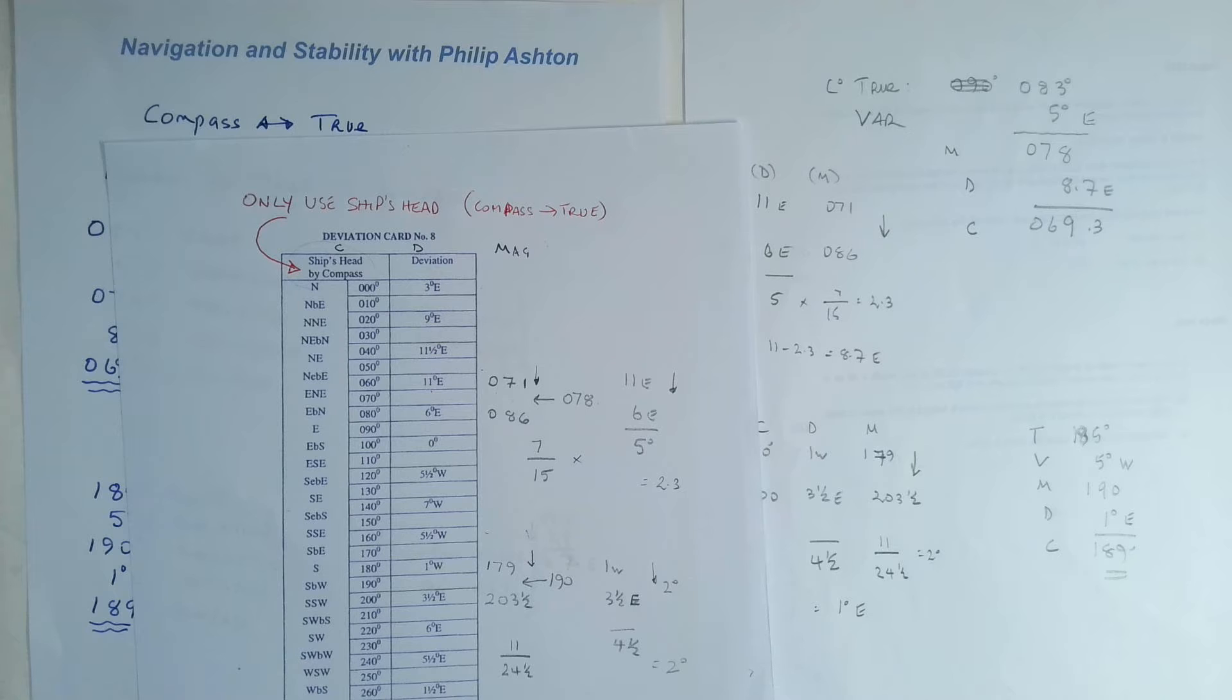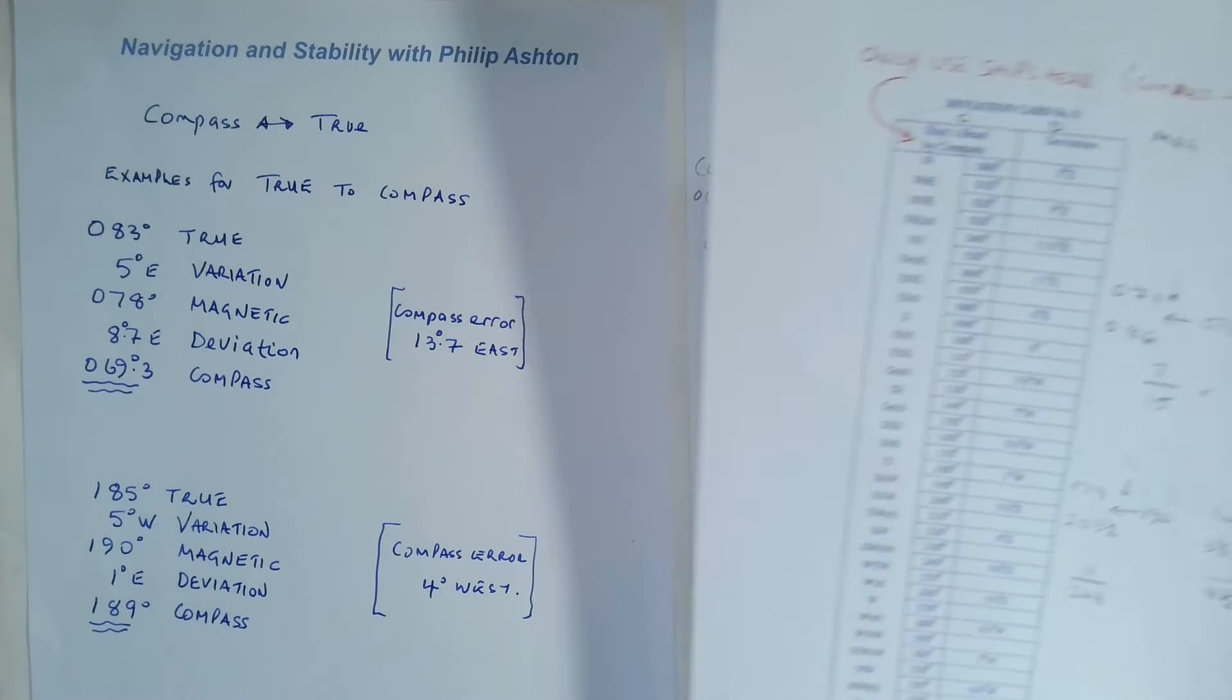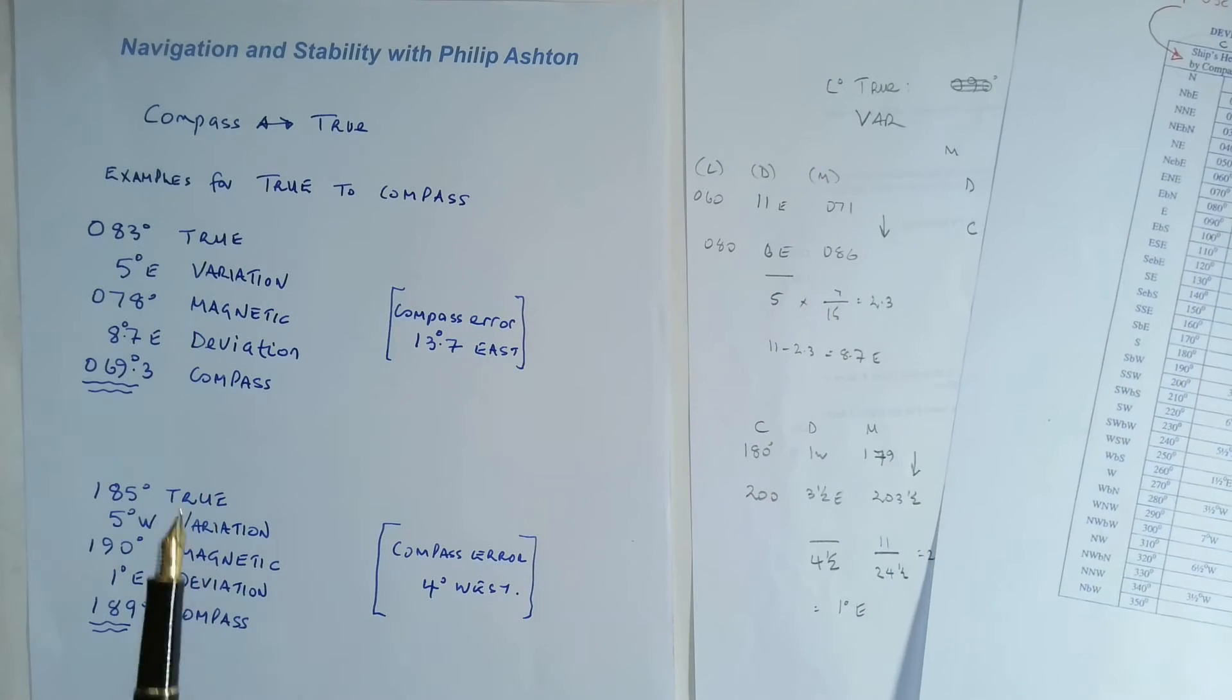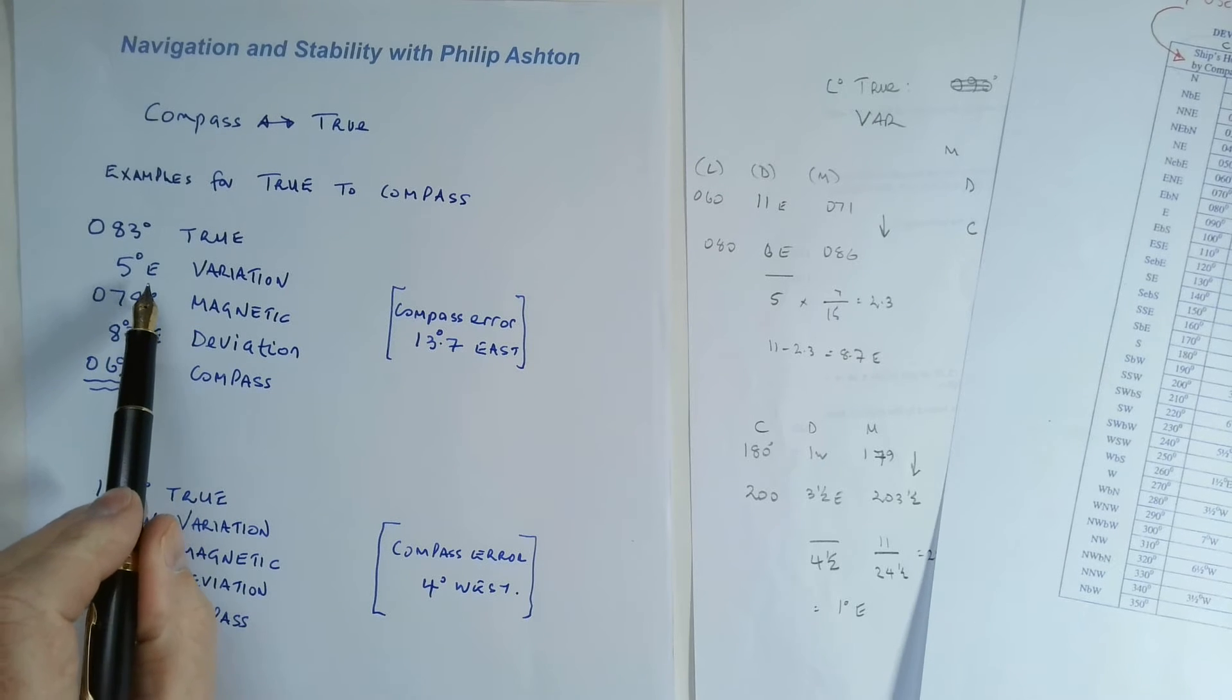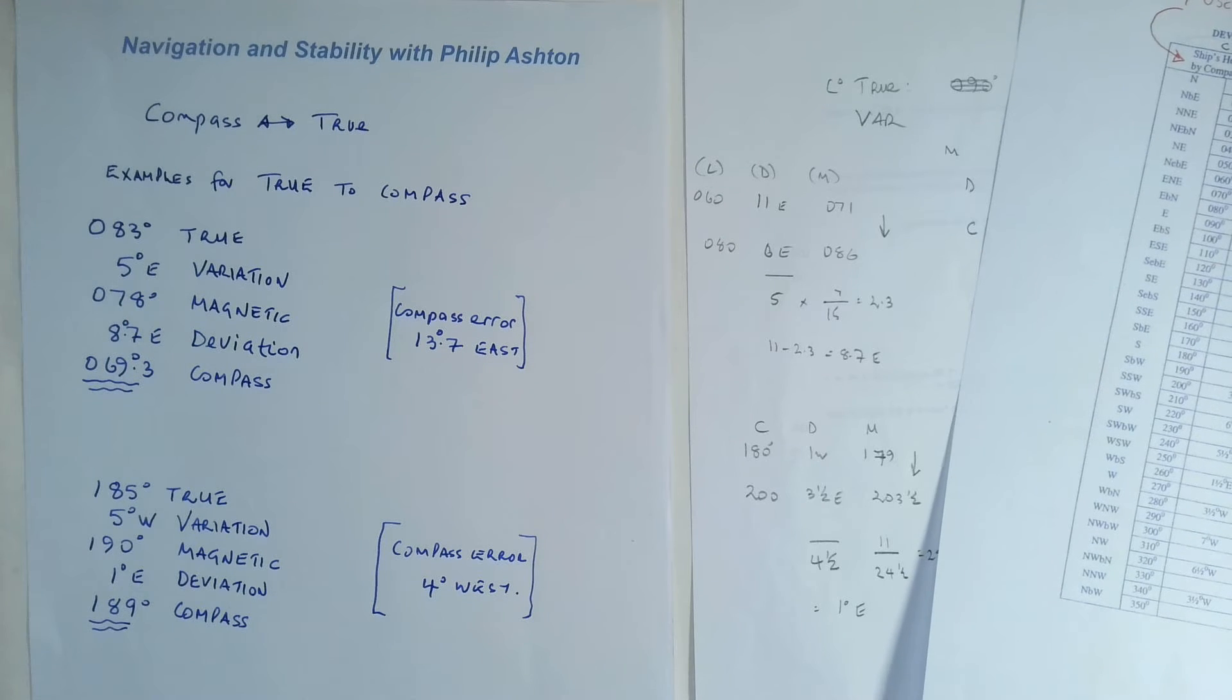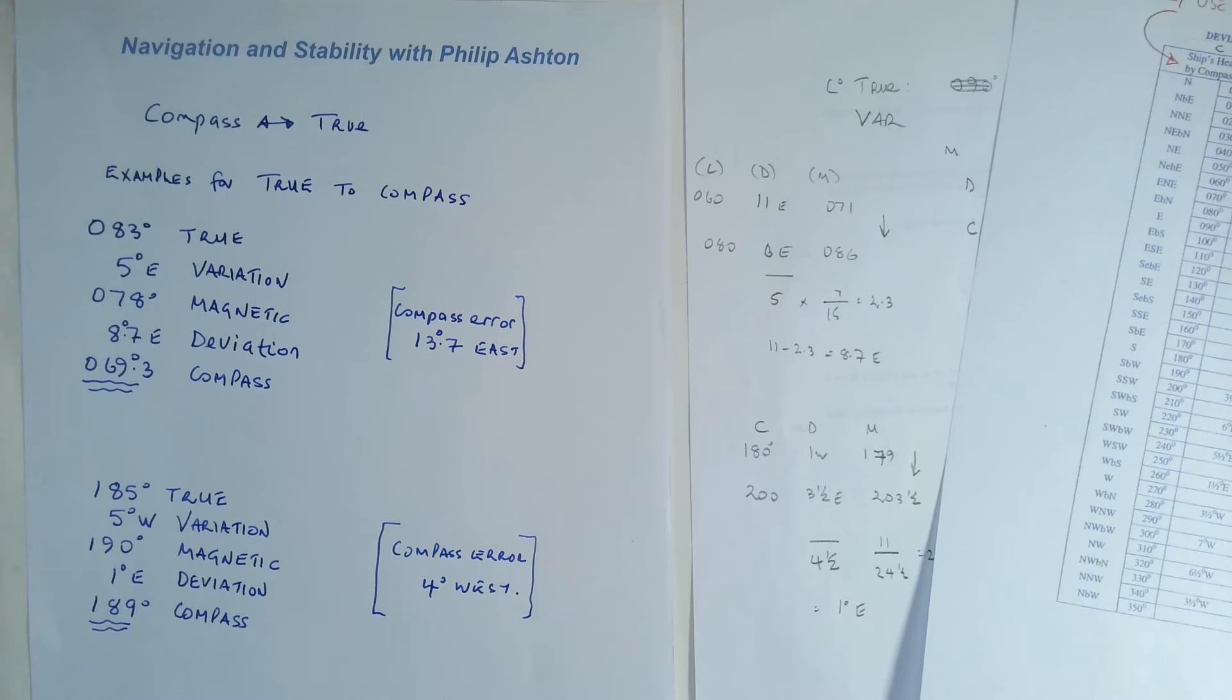So that's something to bear in mind when going from compass to true. Let's go from true to compass. We do the opposite way around, of course. We apply variation first, and if the error is east, then the compass is least. So we're going from true towards compass, so we would subtract.